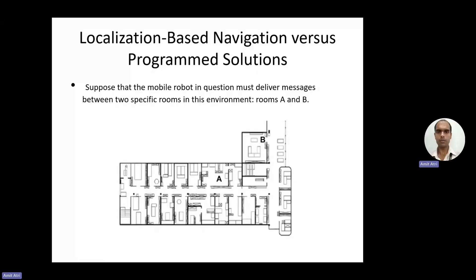Today's topic is robot localization. Under localization, we will be discussing two types of methods: map-based and behavior-based. In the diagram shown, the robot has to move from point A to point B — some type of activity is planned or some message it has to deliver, so it has to move between these two points.